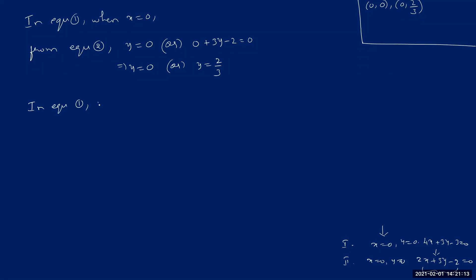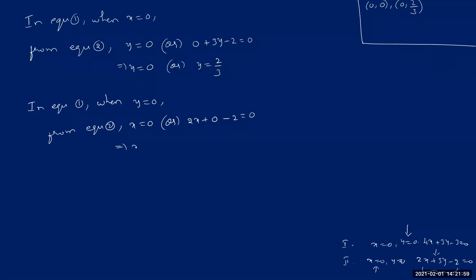Taking y = 0 from the first equation, and substituting y = 0 into 2x + 3y = 2 gives 2x = 2, so x = 1. We already have (0, 0) from before. The new combination is (1, 0).